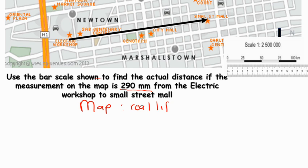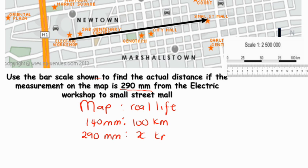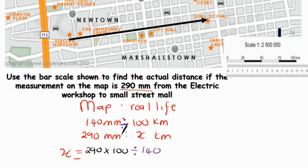Map as to real life: 140 millimeters represents 100 kilometers in real life. We have measured 290 millimeters, and we have X kilometers to work out. I go for my cross multiplication — the seventh method. So it is 290 times by 100, the black part, and then divide by 140, the purple part. Our answer will be 207.14 kilometers.